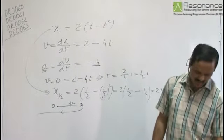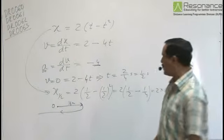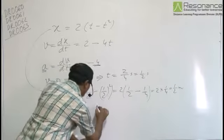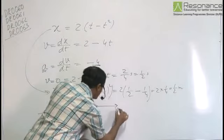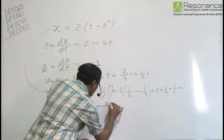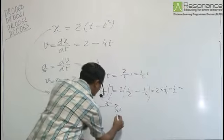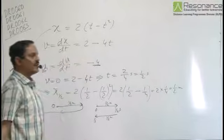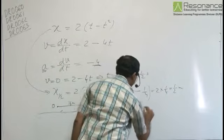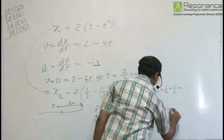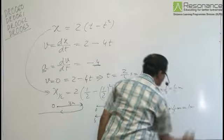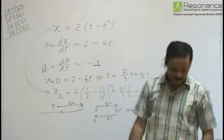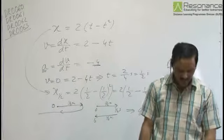Now, the total distance traveled by the particle from t = 0 to t = 1 second. From t = 0 to t = 0.5s, it moves half a meter rightward. In the next half second, from 0.5s to 1s, it moves half a meter leftward. So the total distance traveled in one second is 0.5 + 0.5 = 1 meter. The correct option is B.